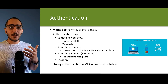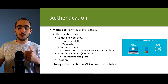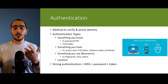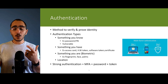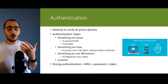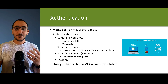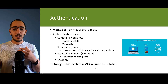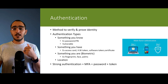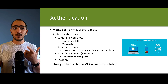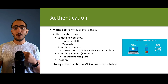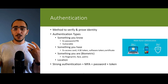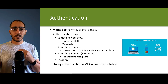Another authentication type is something that you have — it could be a certificate, a software token installed on your phone that generates a code, a hardware token, or an access card for entering a building. Another type is something that you are, which is biometrics: facial recognition, fingerprints (commonly used on phones), palm scans, also used for accessing more secure buildings.